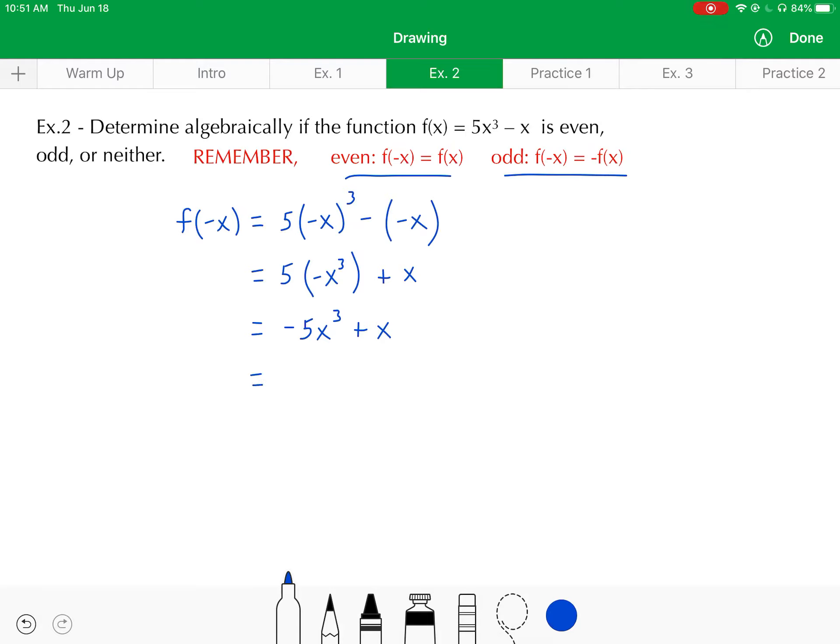Instead, this result is equivalent to the negative of f(x). Negative f(x) just means you're just changing the signs on each term of the original function. So, since it's the opposite, negative 5x cubed plus x is the opposite of 5x cubed minus x. We are going to say that f(x) is an odd function.